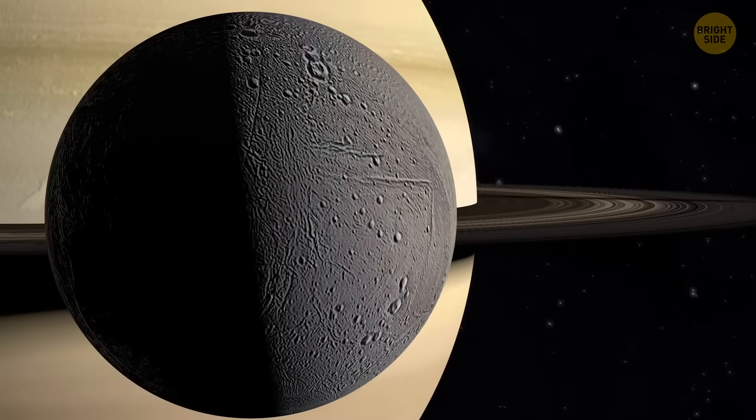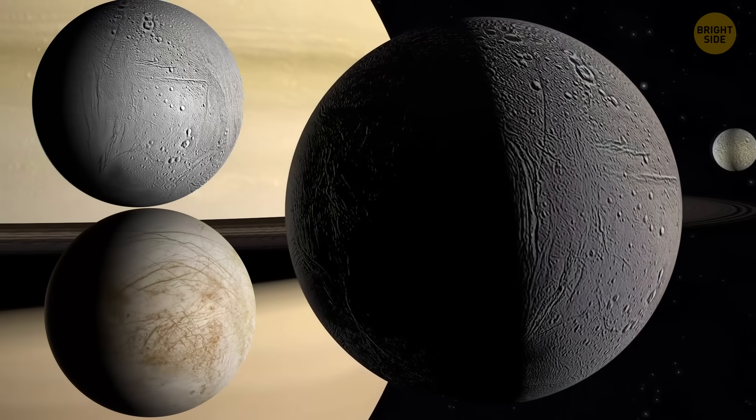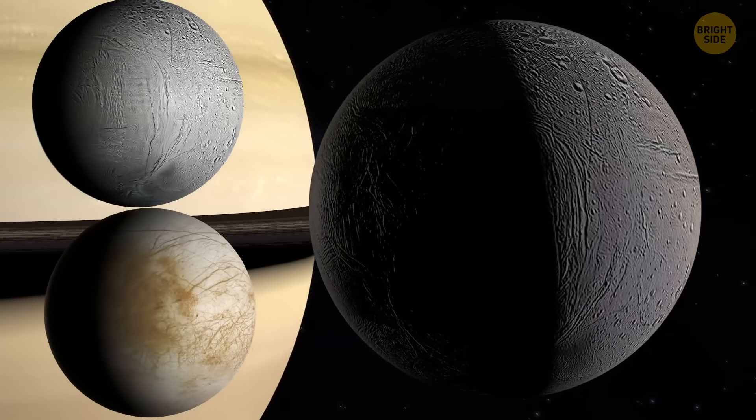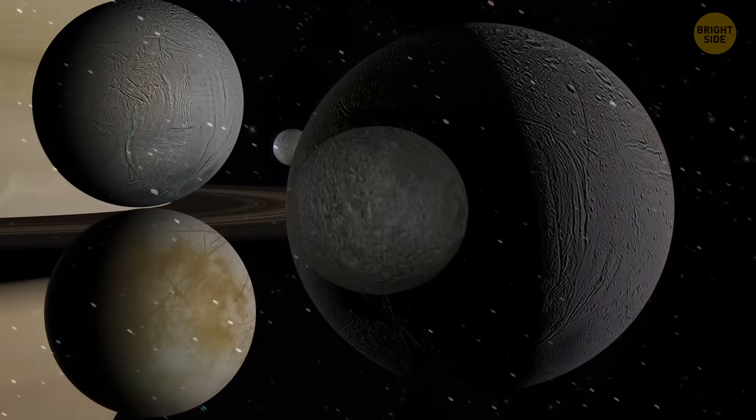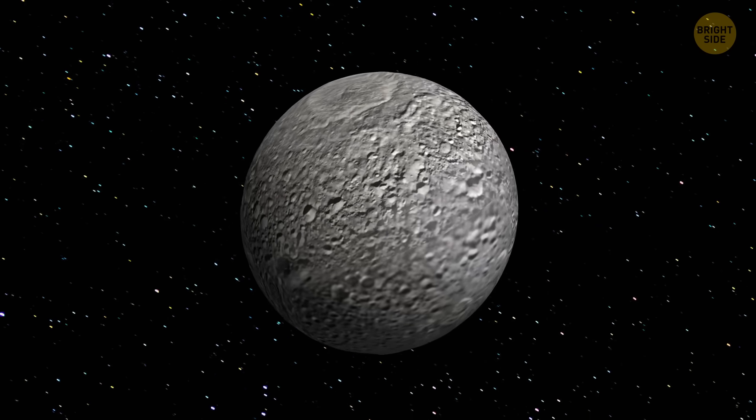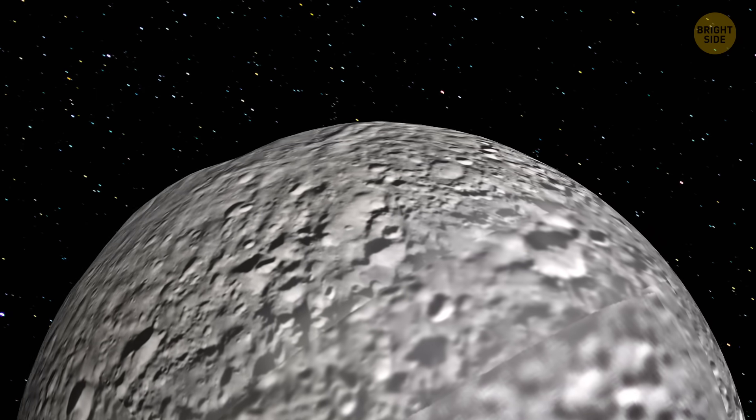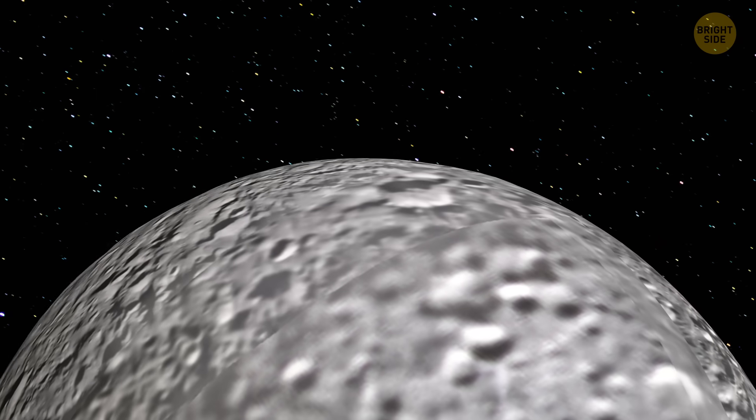Mimas doesn't look like a typical ocean world. When you look at Europa or Enceladus, you can literally see the cracks and crevices in their icy shells. Mimas looks smooth and quiet, almost like a cue ball in space. The craters look permanent, carved in rock rather than ice. Nothing about it screams ocean world. But a few years ago,